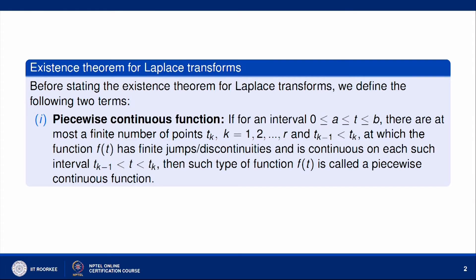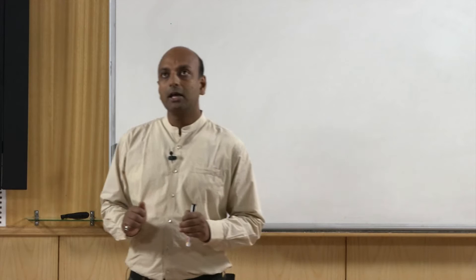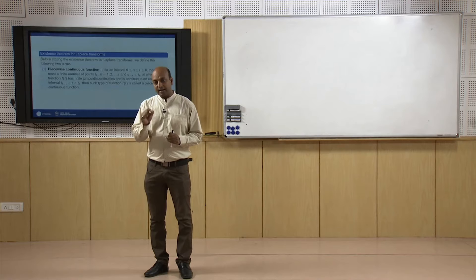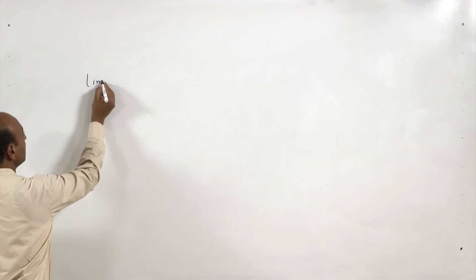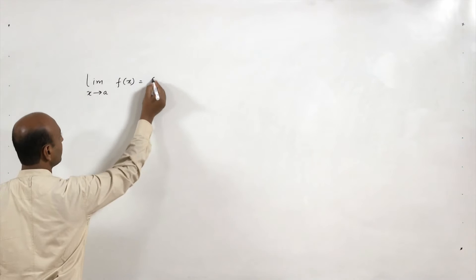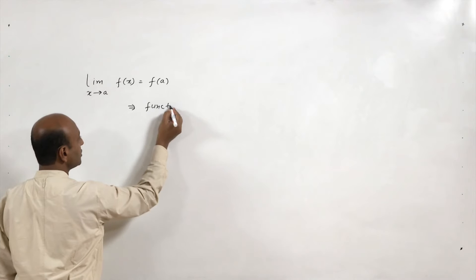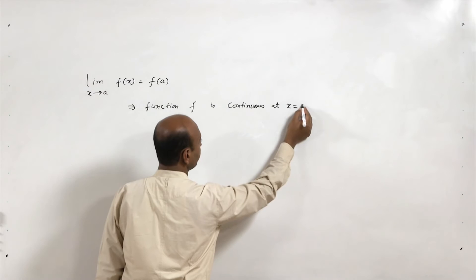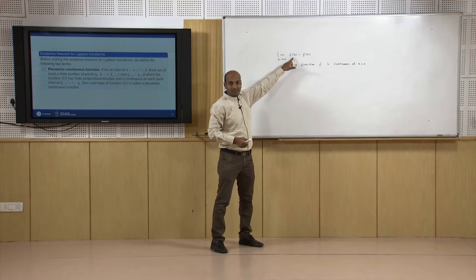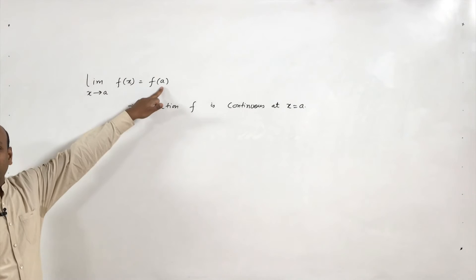What is a piecewise continuous function? We already know what a continuous function is. A continuous function means the limit of the function at that point exists and must be equal to the value of the function at that point. Continuity means limit as x tends to a of f(x) must be equal to f(a). This means the left-hand limit equals the right-hand limit, which equals the value of the function at that point.